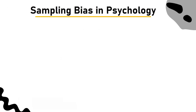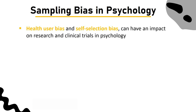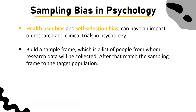Sampling bias in psychology: Healthy user bias and self-selection bias can impact research and clinical trials in psychology. When this occurs, the process's internal validity is compromised, increasing the likelihood of many errors. To lessen sampling bias in psychology, work on collecting information from a well-diversified research population. You can build a sample frame — a list of people from whom research data will be collected — and then match the sampling frame to the target population.